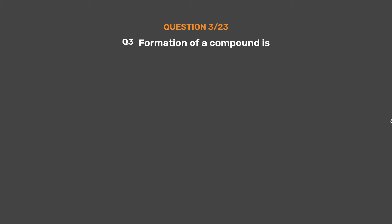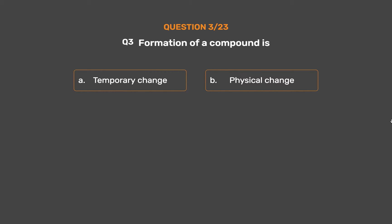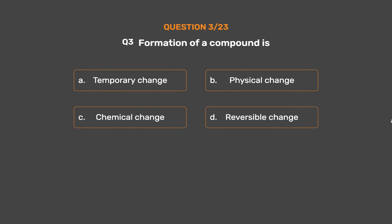Question number 3. Formation of a compound is — Option A: Temporary change. Option B: Physical change. Option C: Chemical change. Option D: Reversible change.